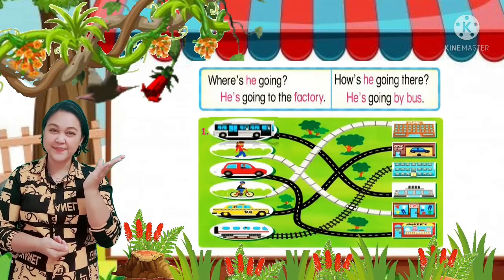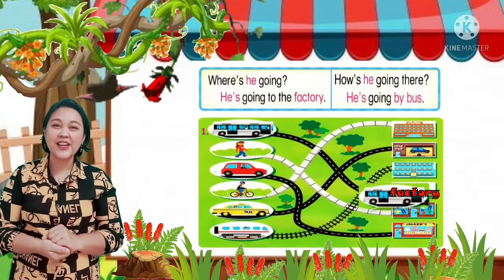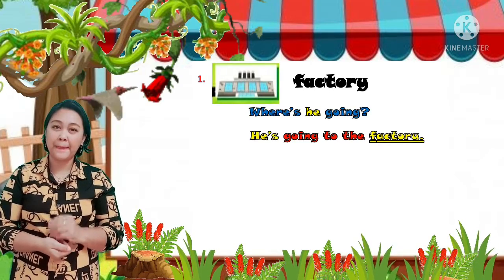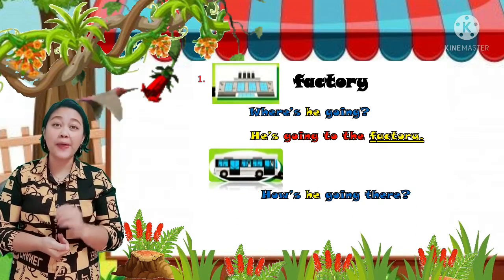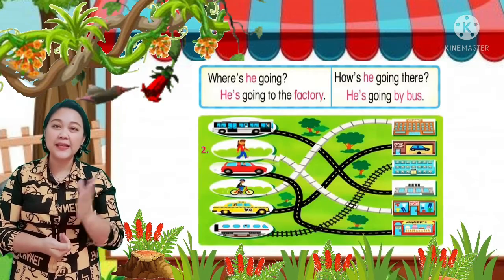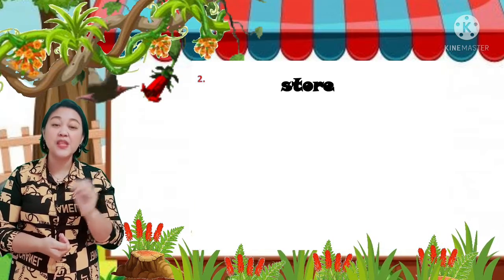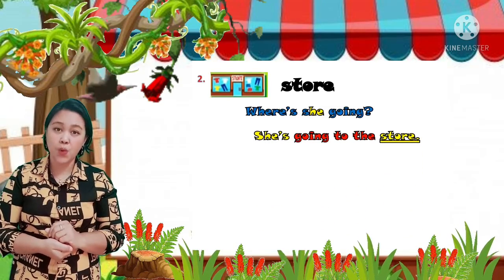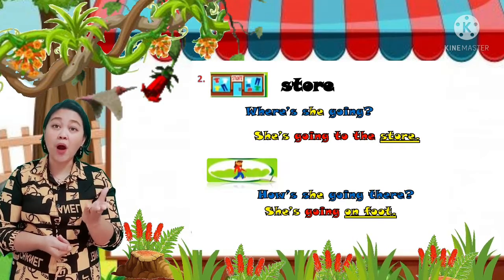Now let's try to answer number 1. Factory. Where's he going? He's going to the factory. How's he going there? He's going by bus. Number 2. Look at the picture number 2. Store. Where's she going? She's going to the store. How's she going there? She's going on foot.